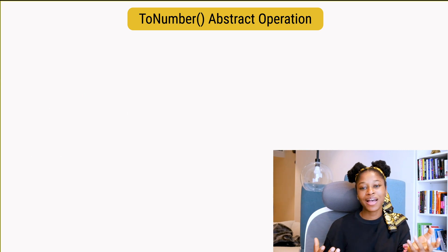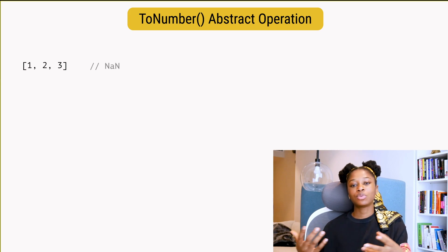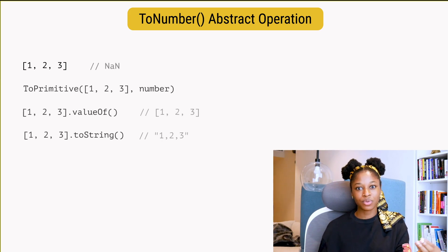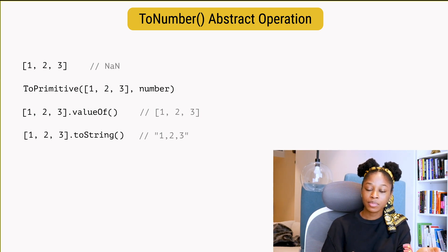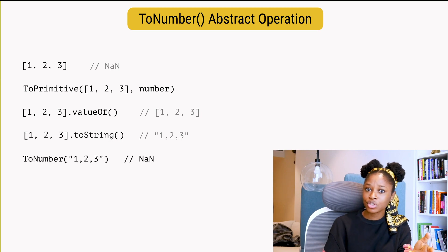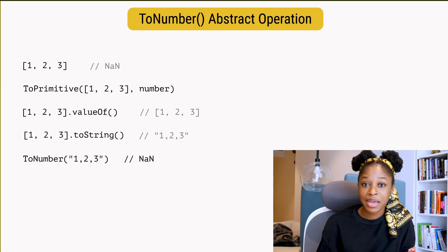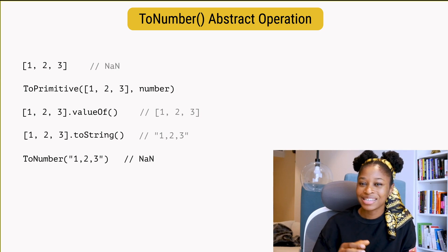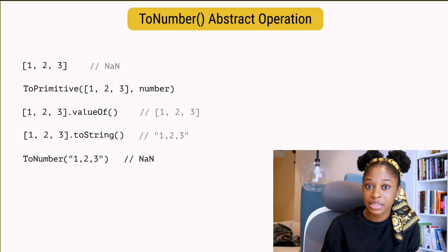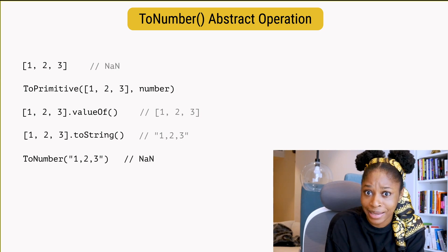What if we have an array containing numbers? It will get converted to its primitive equivalent first, and that is a string containing the array elements separated by commas. If the ToNumber abstract operation receives that as an argument, it will return NaN, because the spec says if the grammar cannot interpret the string as an expansion of a string numeric literal, then the result of ToNumber is NaN.